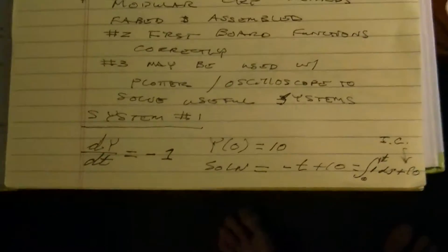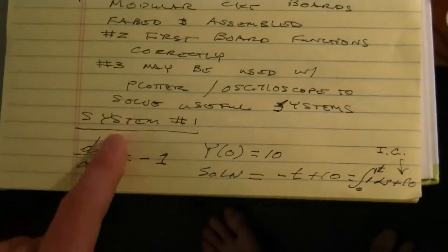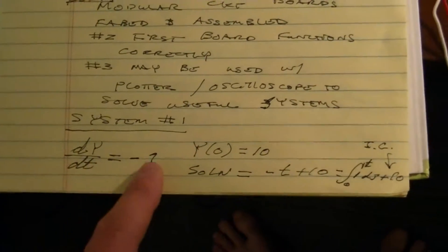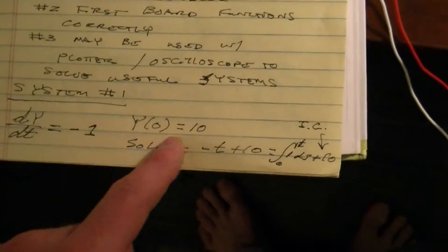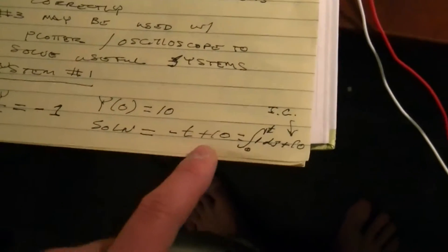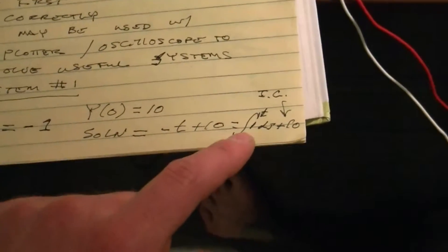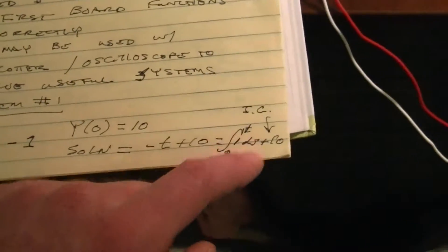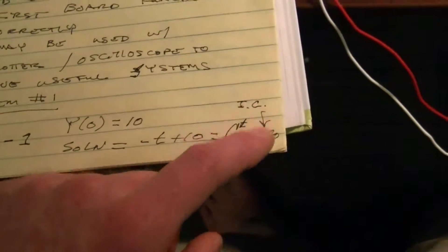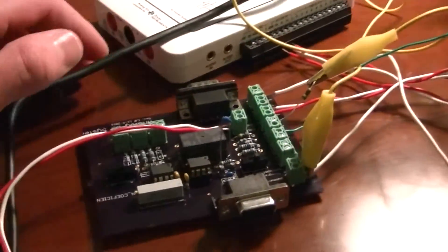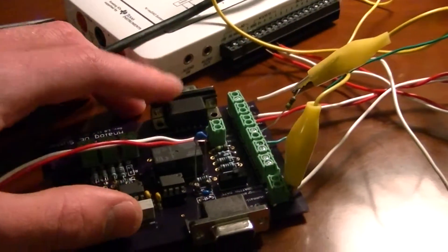I'm going to now give a demonstration of how this can be done. So let's think of this system. dy/dt equals negative 1. Initial condition is 10. Now the solution we all know from calculus is negative t plus 10, which is the integral of 0 to t of 1 d tau plus initial condition, which is 10. IC means initial condition. But now, how would this apparatus here show this equation? Well, it's very simple.